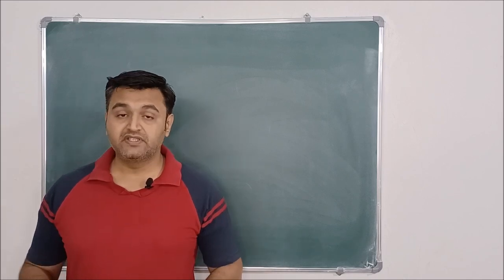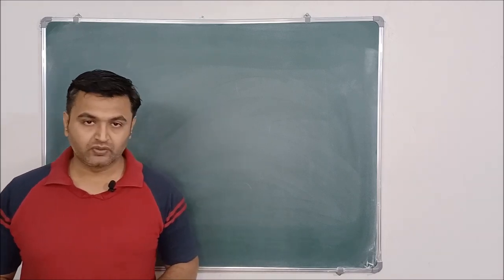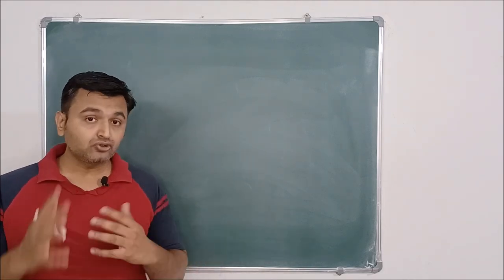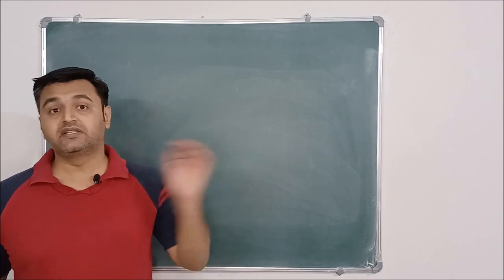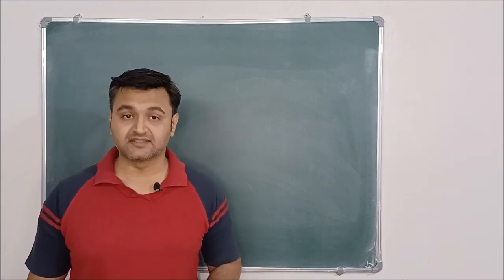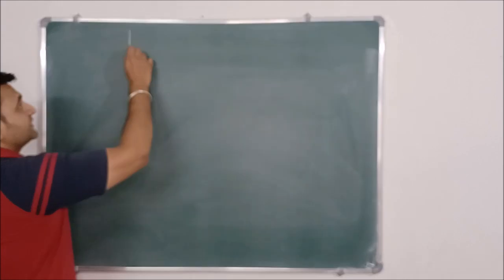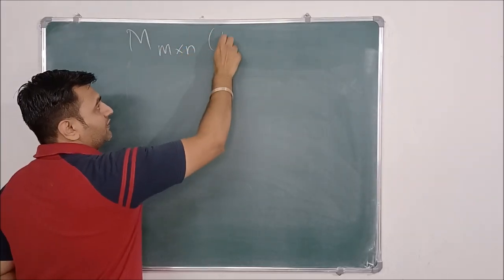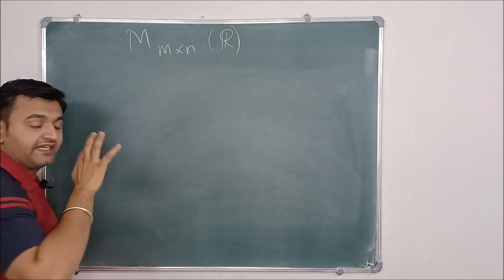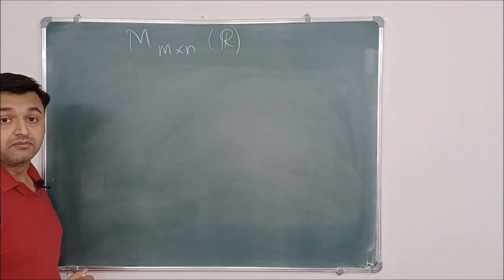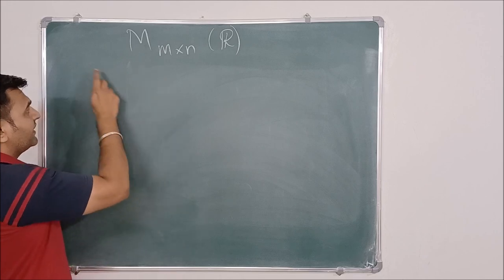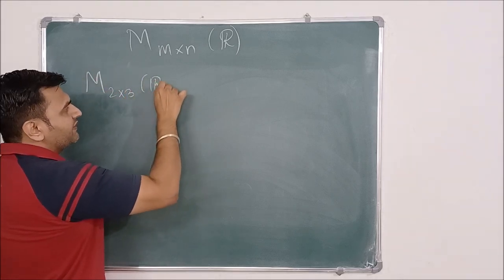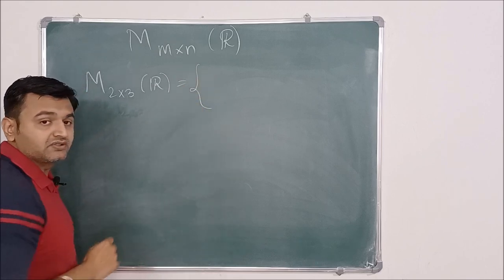Today we are going to see another family which forms a vector space, but under some specified operations. I will also show you that the same family under different operations does not form a vector space. The family we are going to talk about is the set of all M×N matrices over real numbers — that means the entries of the matrix are real numbers. For simplicity, let me first work with all 2×3 matrices.